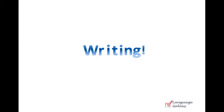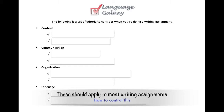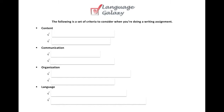Hey there English speakers, Jesse here. I want to help you with your writing today — writing can be tricky. I've set up a set of criteria, four major categories to consider when you're doing a writing assignment. These are specifically tailored for the Cambridge writing exams, but I tried to make them general enough to be transferable to any writing assignment you'll be asked to do. The four criteria are: content, communication, organization, and language.